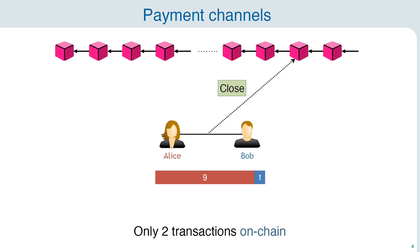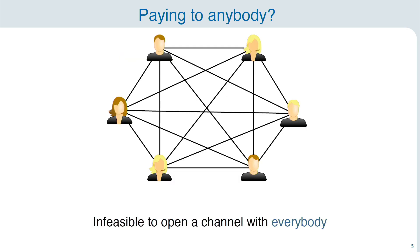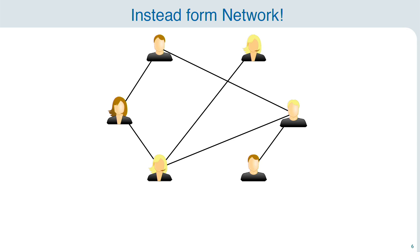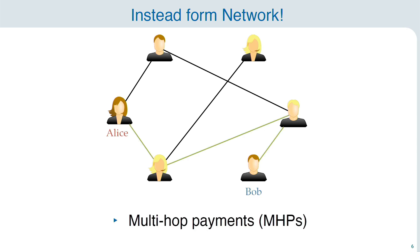This is already a nice solution for two parties, but it doesn't scale out of the box, because we need to lock up some money it is infeasible to open a payment channel to everyone else. What happens instead is we have a network that is more sparse and where the existing payment channels are connected to form a network. Within this network, any two parties that are connected via a path of payment channels can do a payment to one another.